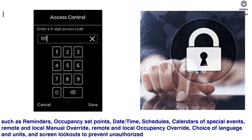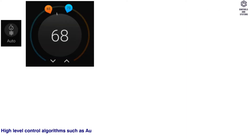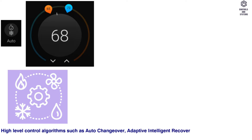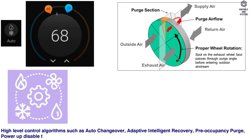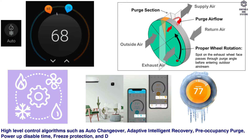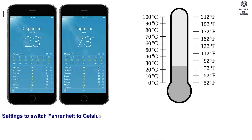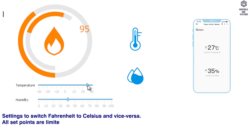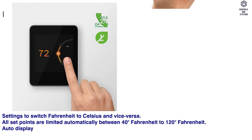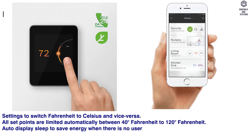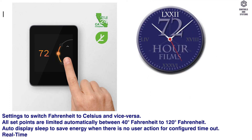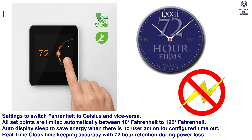Features include choice of language and units, and screen lockouts to prevent unauthorized settings changes. High-level control algorithms such as auto changeover, adaptive intelligent recovery, pre-occupancy purge, power-up disable time, freeze protection, and demand limit controls are supported. Settings to switch Fahrenheit to Celsius and vice versa are available. All set points are limited automatically between 48 and 128 degrees Fahrenheit. Auto display sleep saves energy when there is no user action for a configured timeout. Real-time clock timekeeping accuracy with 72-hour retention during power loss.